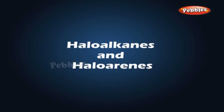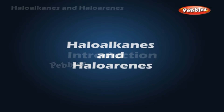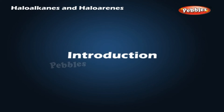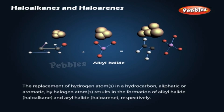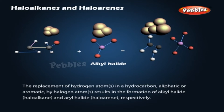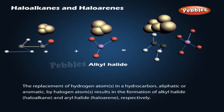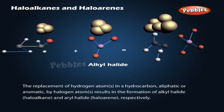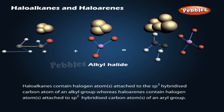Haloalkanes and Haloarenes — Introduction. The replacement of hydrogen atoms in a hydrocarbon, aliphatic or aromatic, by halogen atoms results in the formation of alkyl halide (haloalkane) and aryl halide (haloarene), respectively.